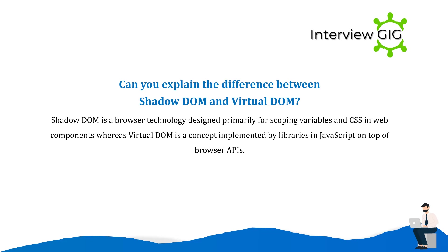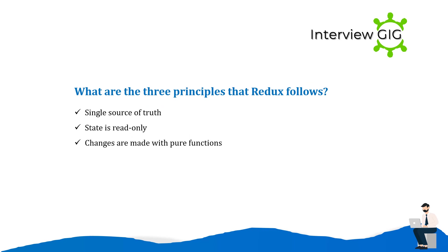Can you explain the difference between Shadow DOM and Virtual DOM? Shadow DOM is a browser technology designed primarily for scoping variables in CSS and web components, whereas Virtual DOM is a concept implemented by libraries in JavaScript on top of browser APIs. What are the three principles that Redux follows? Single source of truth, state is read-only, and changes are made with pure functions.